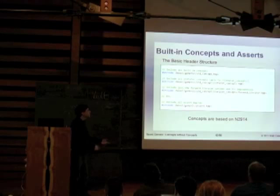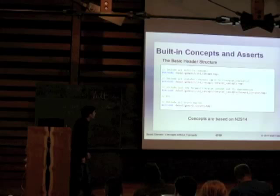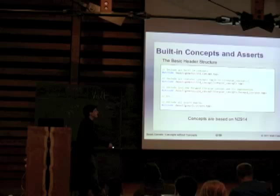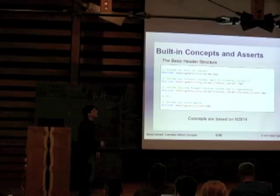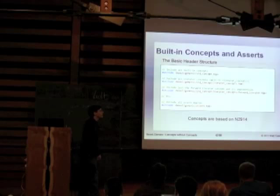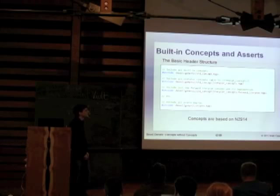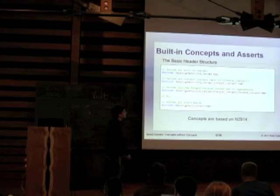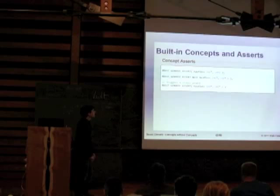Here's the basic header structure for including concepts and asserts. It's boost/generic/std/concept/ followed by the associated header file from the C++0x standard prior to concepts being removed. You can pull them out individually, which is actually kind of necessary because compile times are pretty horrible if you try to include the entire concept library at once. I just have one header for the asserts, and all the concepts are based on N2914.